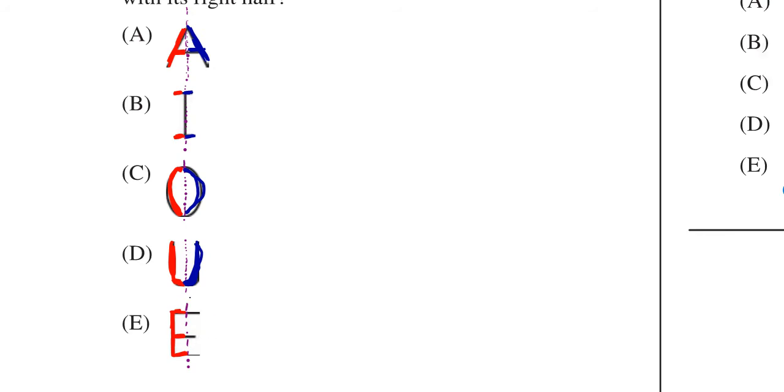So, E is the only one you can't do it for. Now, you can do it with a horizontal line, but they did say vertical line.